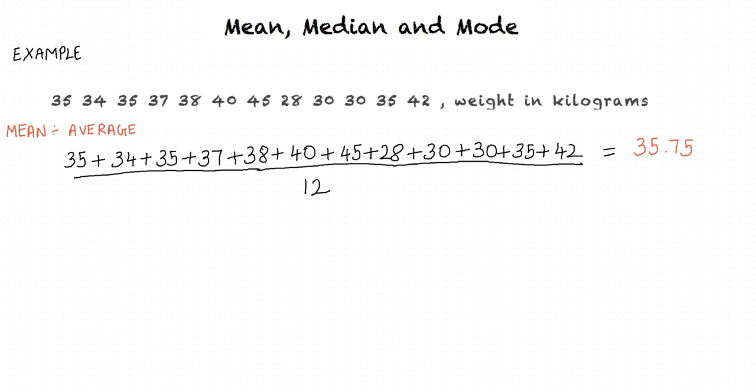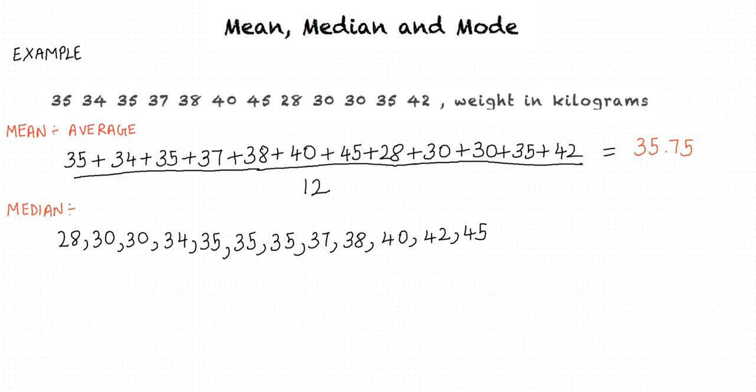We calculated the mean already, but we still have to calculate the median and mode. We must always remember to arrange the data in either ascending or descending order before calculating the median. Sorting the data in ascending order, we get: 28, 30, 30, 34, 35, 35, 35, 37, 38, 40, 42, 45.